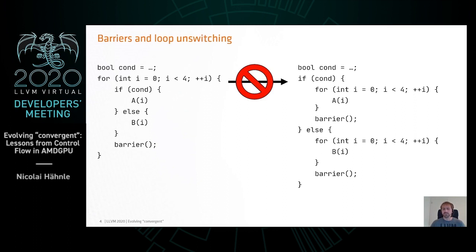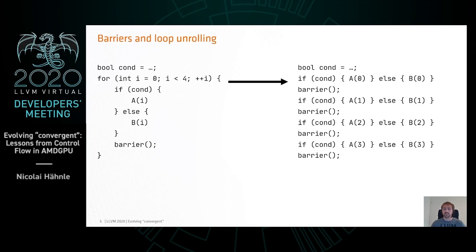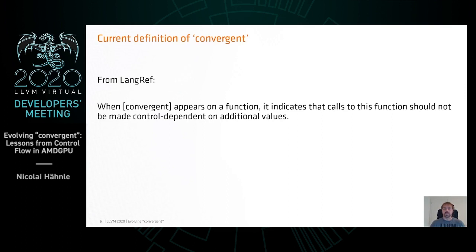So looking at that, you might say the problem was we duplicated the barrier call — maybe we should forbid that. On the other hand, there are cases where duplicating is allowed. Something else you can do with the loop is unroll it, and that's okay, because whenever a thread reaches the barrier, the other thread in its thread group will reach the same point in the program, assuming they did so in the original pre-transform code.